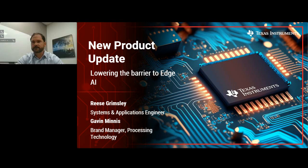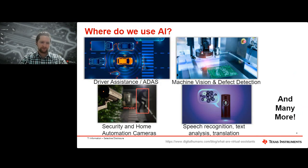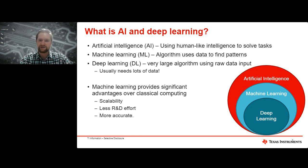Thanks for the introduction, Gavin. Some of you may already be familiar, but I'll describe what AI and deep learning are. Generally, we can look at AI, machine learning, and deep learning as subsets of each other. Artificial intelligence is using human-like intelligence to solve tasks on a computer — generating algorithms that help computers view the world as we do. Audio and vision are two of the core application spaces for those.